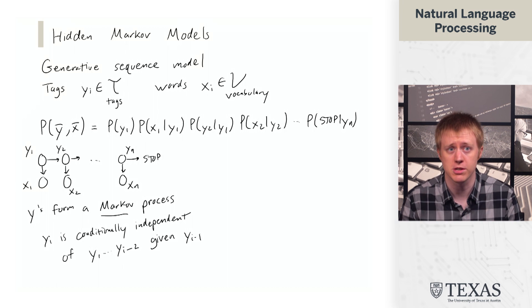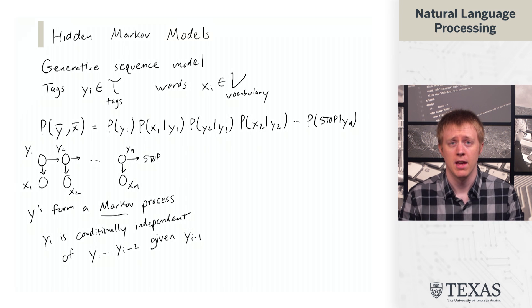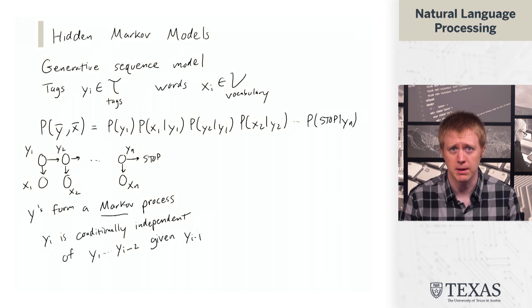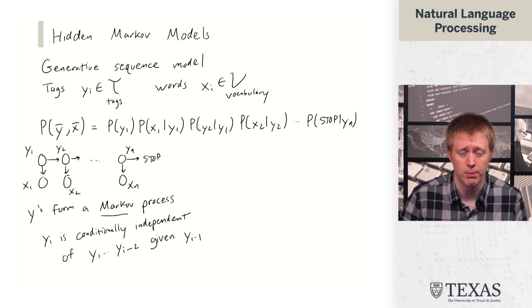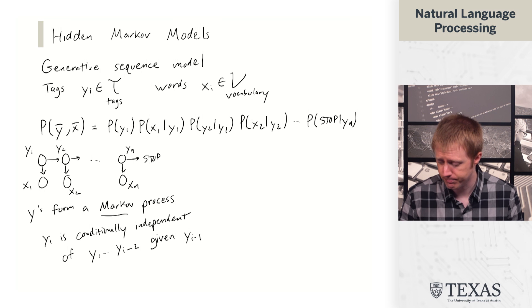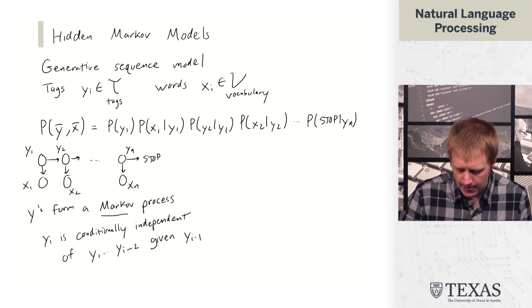So these are assumptions that the model is making, and the reason you make these kinds of assumptions in generative models is for tractability, basically, so that you're not having to deal with conditioning and thinking about a whole bunch of different variables at the same time.